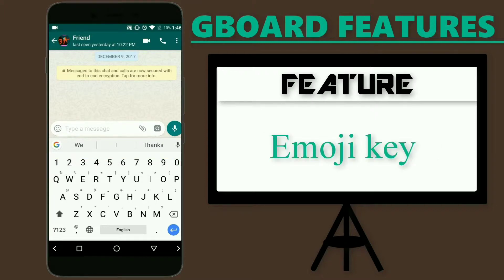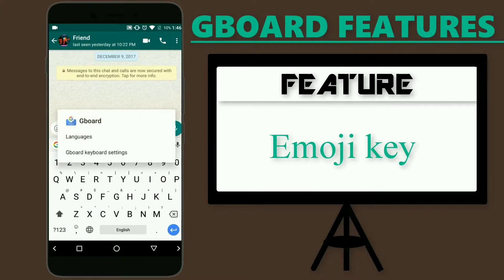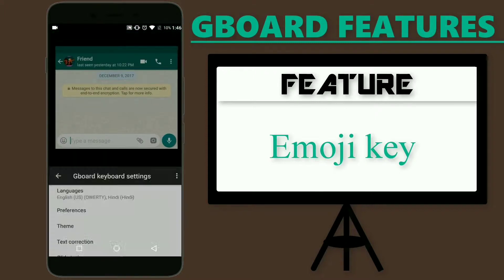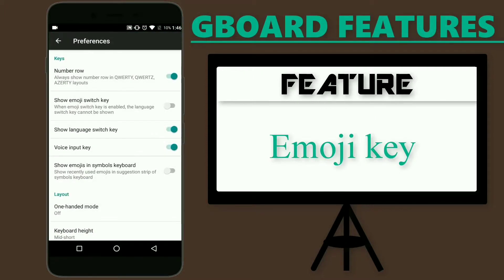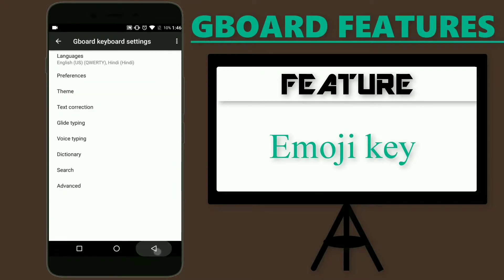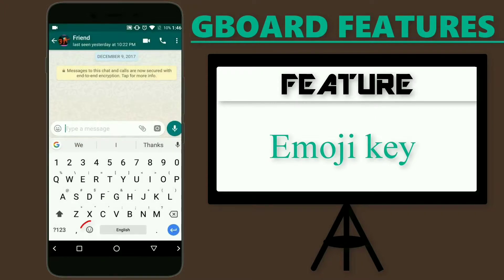If you are someone who uses WhatsApp a lot and uses emojis in your text, then I think it is better to have a dedicated key for it. This can be done by going to the preferences option in the settings and selecting 'show emoji key.' But there is a compromise here — you can either have the language change key or the emoji key.